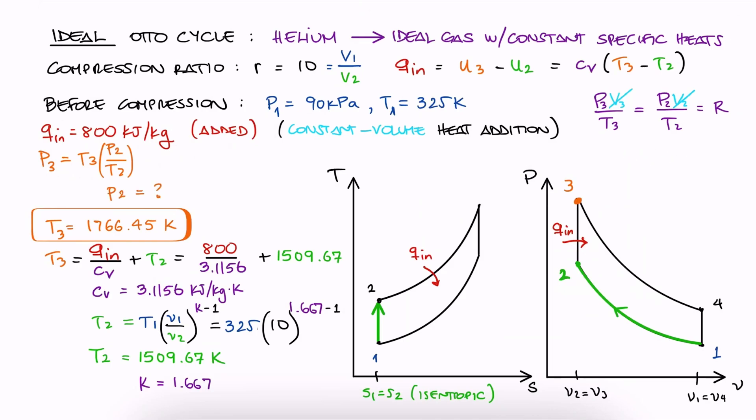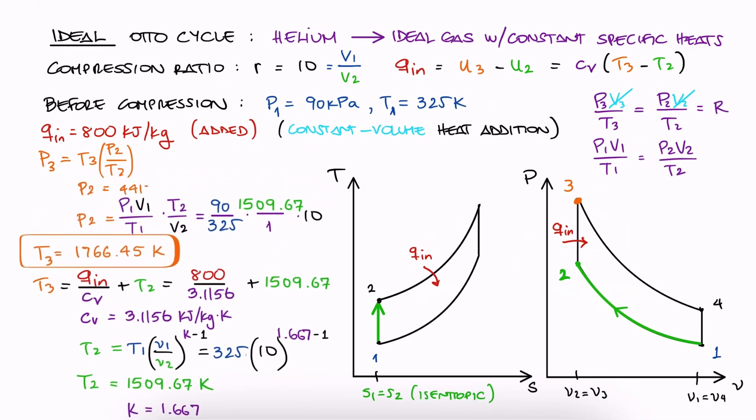But since we can write the same ideal gas expression for between states 1 and 2 to solve for P2, and we have P1, T1, T2, and the volume ratio, we can find P2 and with it substitute it in the previous expression to find P3. This is the pressure at the end of the heat addition process.